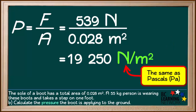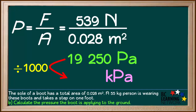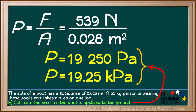The unit newtons per square meter is the same as one pascal, so we can replace newtons per square meter with pascals. The pressure the boot is applying to the ground is 19,250 pascals. Dividing by 1000 gives us the pressure in kilopascals, which comes out to 19.25 kilopascals. So the final answer is: the pressure is 19,250 pascals or 19.25 kilopascals.